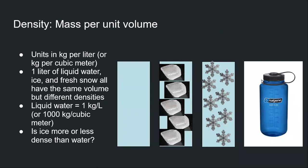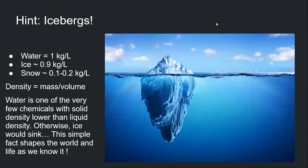Let's take a Nalgene bottle and put some snow into it; in another bottle we'll put some ice, and in a third bottle we'll put some water. Which volume do you think fits the most material? One hint: icebergs. Icebergs are floating on water, meaning the solid phase of the H₂O molecule is floating in the liquid phase.